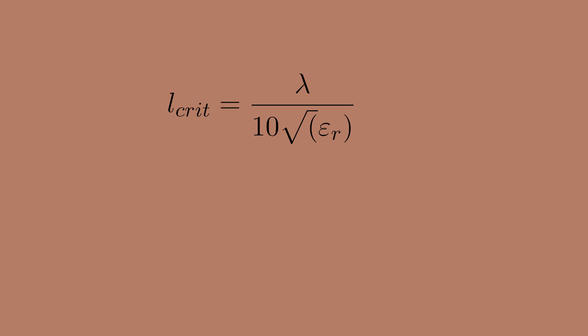The equation shown here is a common rule of thumb to determine the critical length of a PCB trace. The claim is that below this critical length all transmission line effects and the need for impedance matching can completely be ignored.